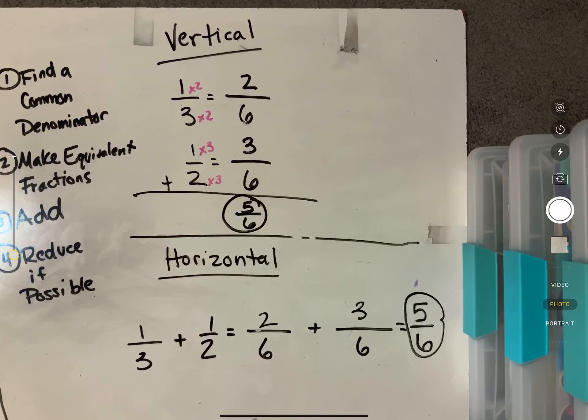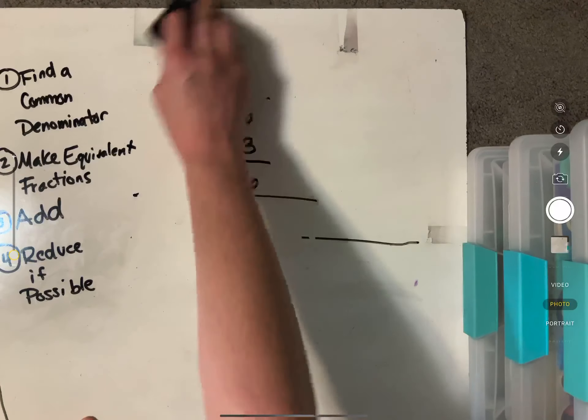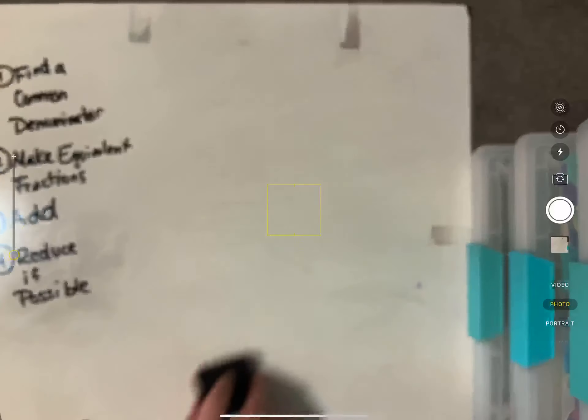I always like to circle my answer so it's easy to find because there's a lot of fractions going on, but you can see that either way you're going to get the same answer. So that is one problem. Let me show you another problem. We're going to do this horizontally today.